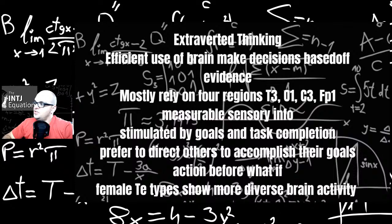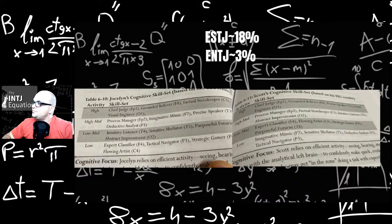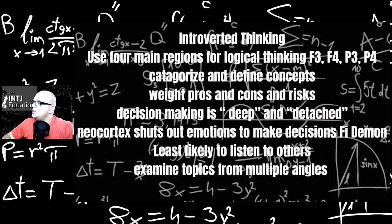TE, extroverted thinking. Efficient use of the brain. Making decisions based off evidence. Most rely on the four regions of T3, O1, C3, FP1. Measurable sensory stimulated by goals and task completion. Prefer to direct others to accomplish their goals. Action before what-if. Female TE types show more diverse brain activity. And ESTJs are about 18% and ENTJs are about 3%. Oh man, ESTJs are the most common type. Have mercy on us.